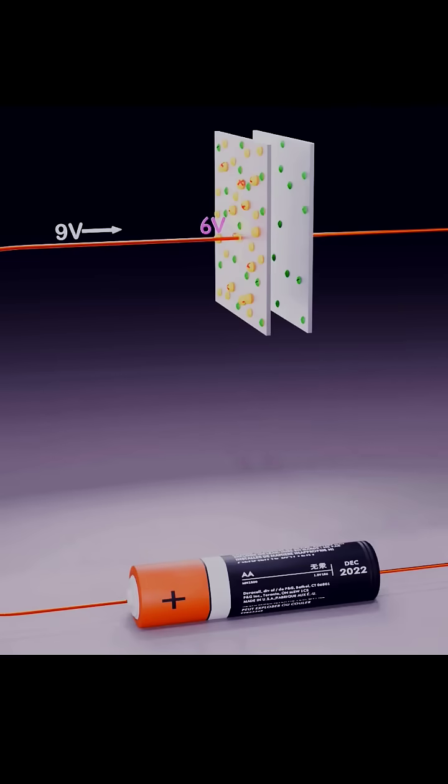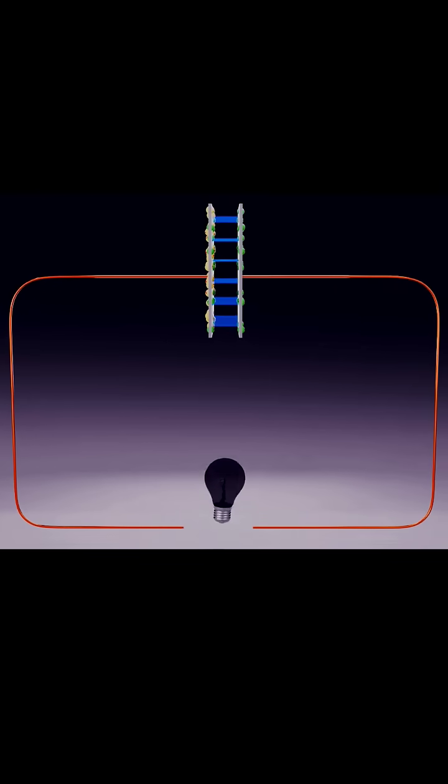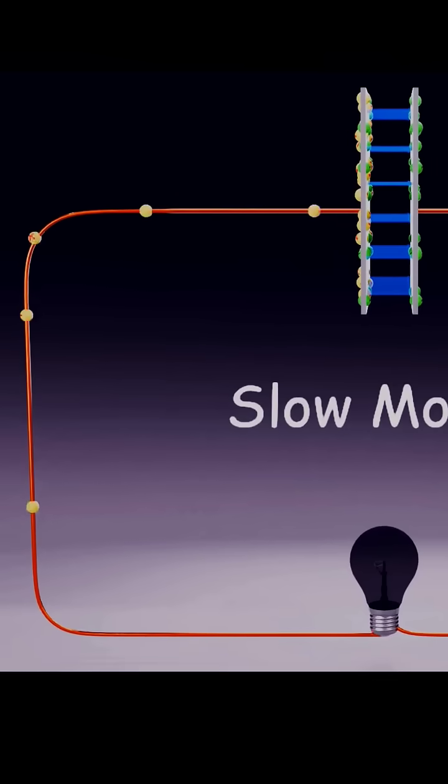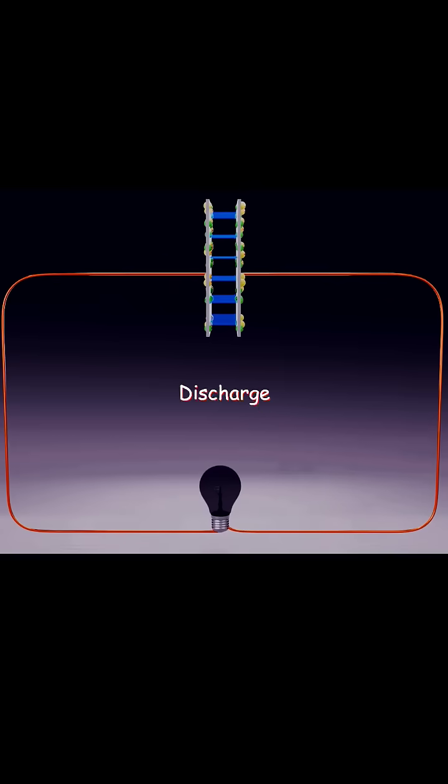These excess positive charges naturally want to flow back to balance the charges. Think of it like many positive charges being forcefully compressed in one place. However, if we replace the battery with a bulb, the charges will flow back to their neutral state through the circuit. The capacitor will then function like a tiny battery, causing the bulb to glow for a while and then quickly discharge.